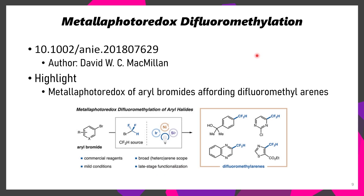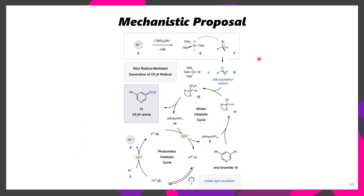The second paper for today involves metallophotoredox difluoromethylation. This is a research article discussing the metallophotoredox of aryl bromides, which enables access to difluoromethylarenes. The way that this reaction works is as follows: initially, a bromine radical is able to abstract a hydrogen atom from tris(trimethylsilyl)silane. This then generates a silyl radical, which is able to abstract a bromine from bromodifluoromethane, generating a difluoromethyl radical.